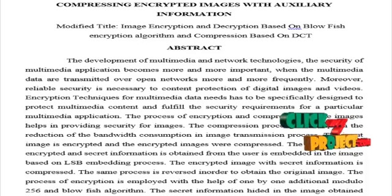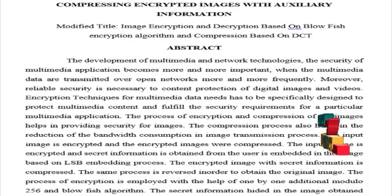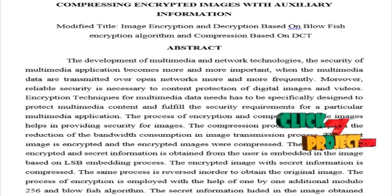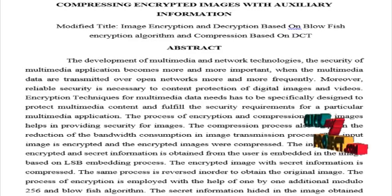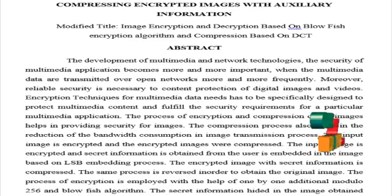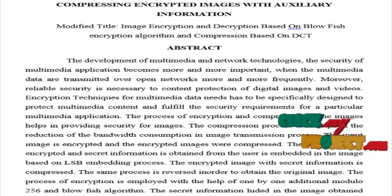The input image is encrypted and secret information obtained from the user is embedded into the image based on the least significant bit embedding process. The encrypted image with secret information is then compressed. The same process is reversed in order to obtain the original image.